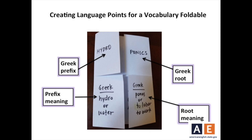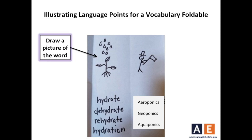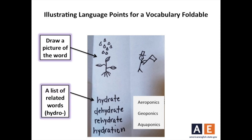Now we will open our mini-books and fill in the inside pages. One way to help students recall new words is to give them many opportunities to hear or use the word. Explain to your students they can draw a picture which represents hydro. In this case, I drew a little plant with rainwater coming down on the plant. Underneath the picture, I've written some words related to hydro, such as hydrate, dehydrate, rehydrate, and hydration.